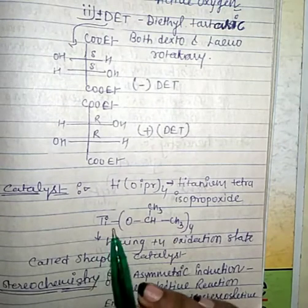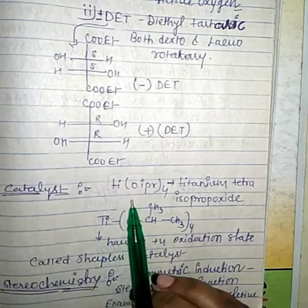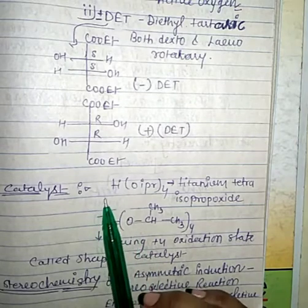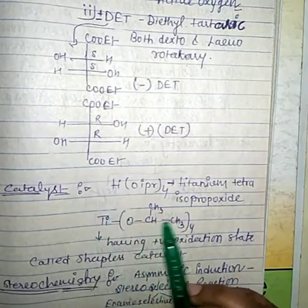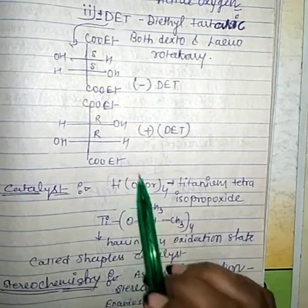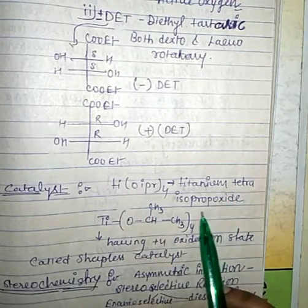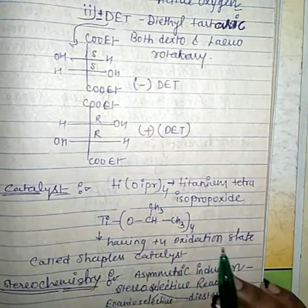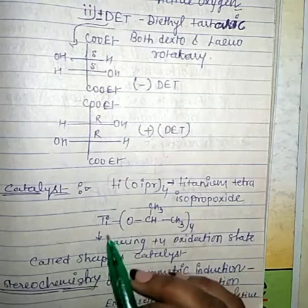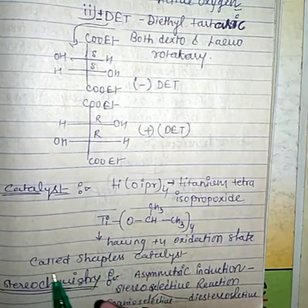The catalyst used in Sharpless asymmetric epoxidation is titanium-catalyzed epoxidation — specifically titanium tetraisopropoxide. Titanium has a +4 oxidation state in this catalyst, and this is called the Sharpless catalyst.